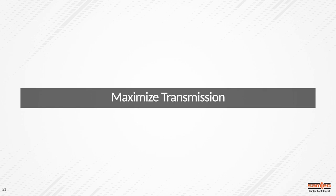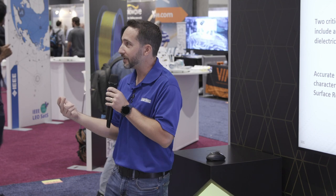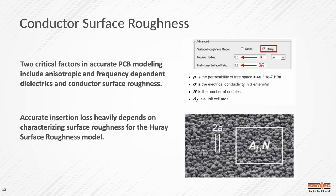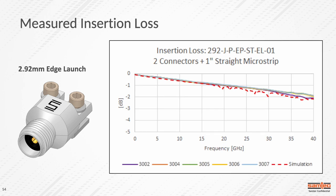On the transmission side, two critical factors from an insertion loss point of view: first, for accurate PCB modeling, anisotropic material and frequency dependencies on your dielectrics are very important. But something extremely important for insertion loss on a PCB — particularly over 10 GHz or 30 GHz bandwidth — is surface roughness. You should use finite conductivity boundaries to account for surface roughness. At high frequencies, use the Huray snowball approximation. If you have the correct material properties and the correct surface roughness, you can get a simulation insertion loss plot that correlates very well with your measured insertion loss.